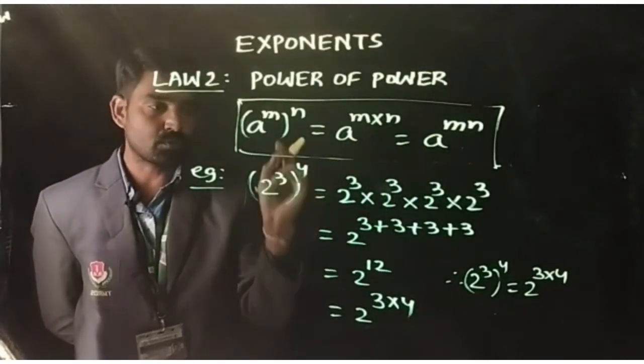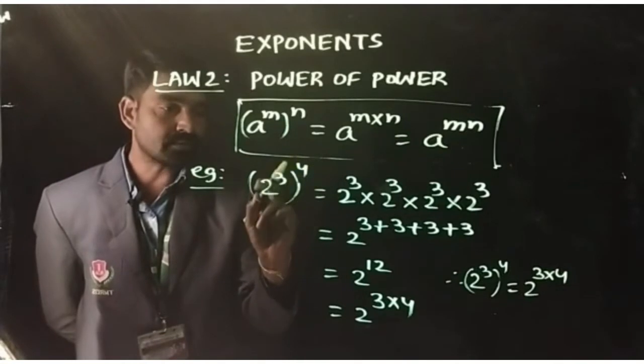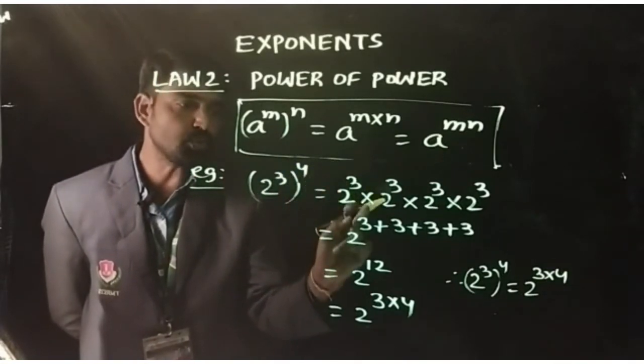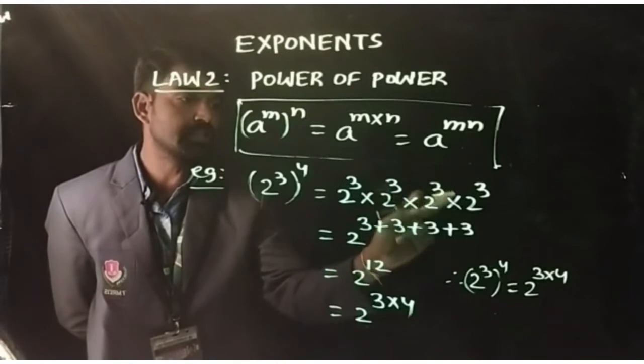Example: (2^3)^4. We can write it as 2^3 four number of times. That is 2^3 × 2^3 × 2^3 × 2^3.